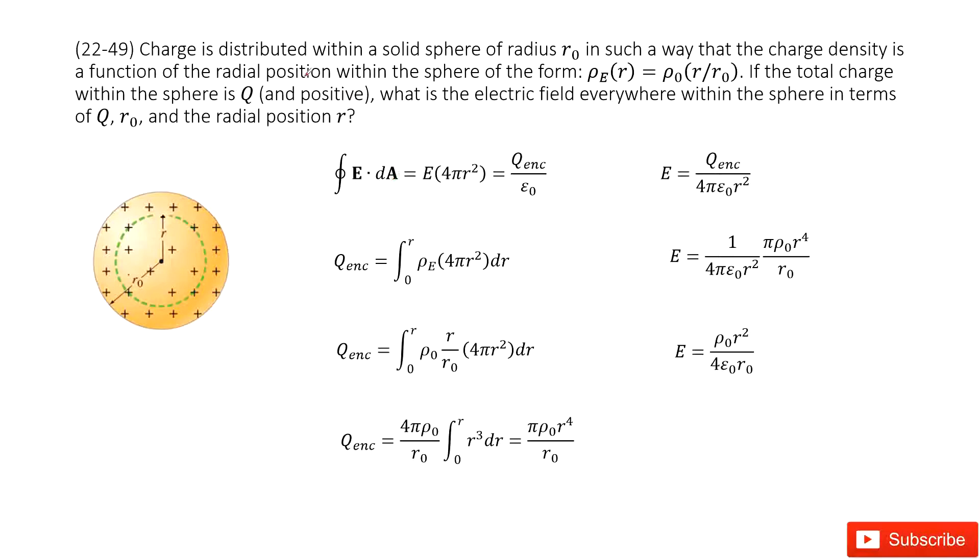We can see the charge is distributed within a solid spherical object. The radius is R0 and this charge density is distributed with this function, a variable with R. Now we know the total charge is Q. What is the electric field everywhere inside this spherical object?